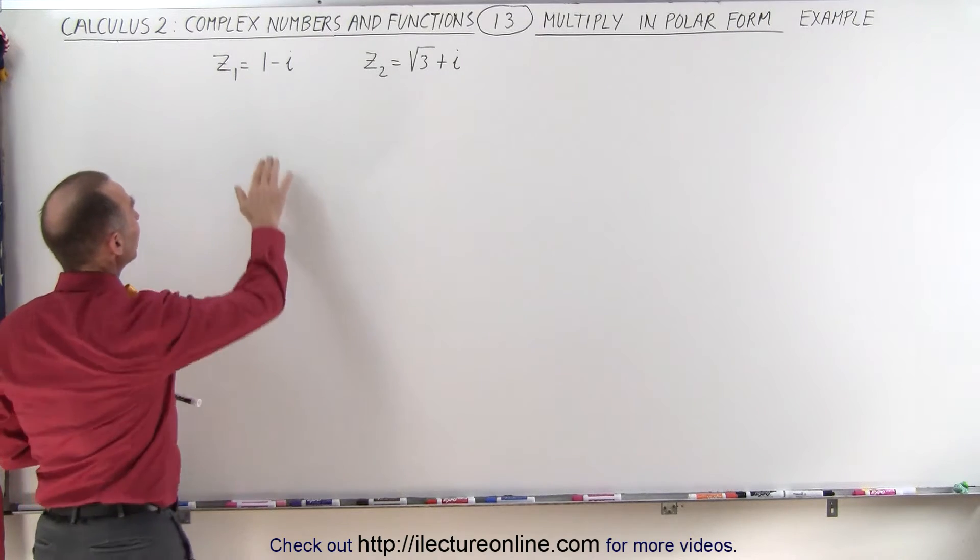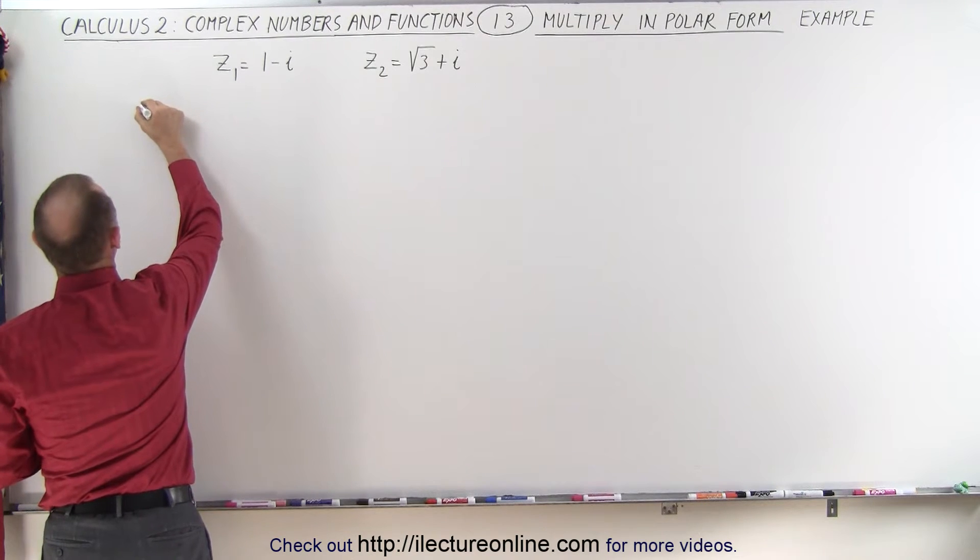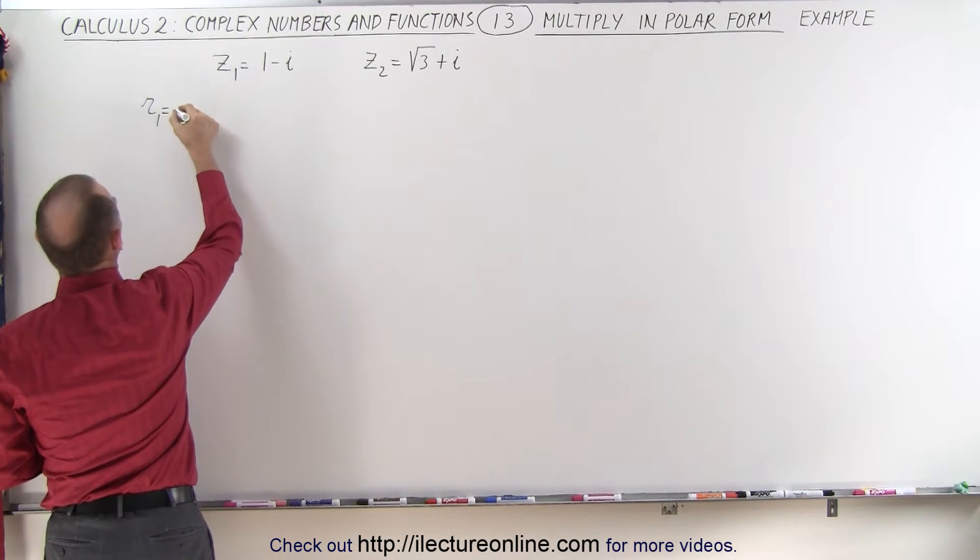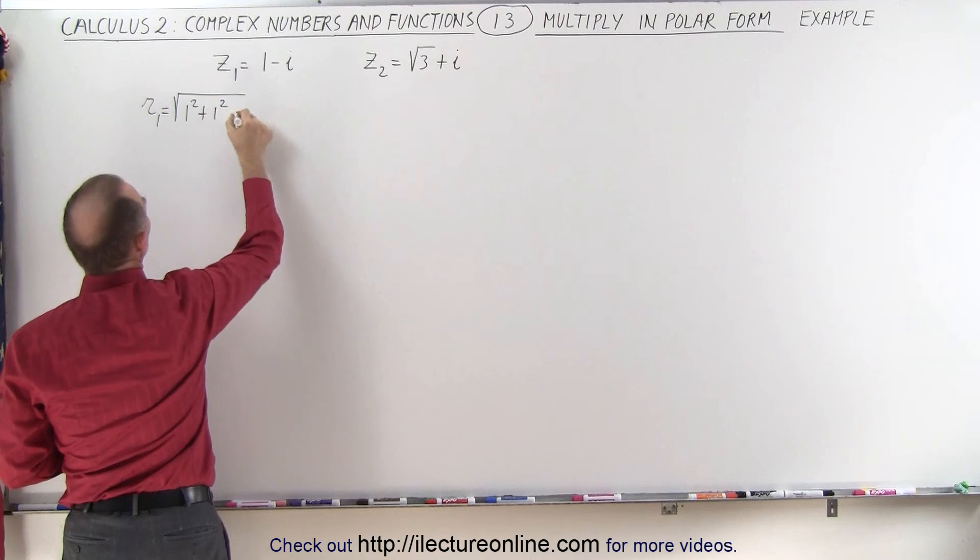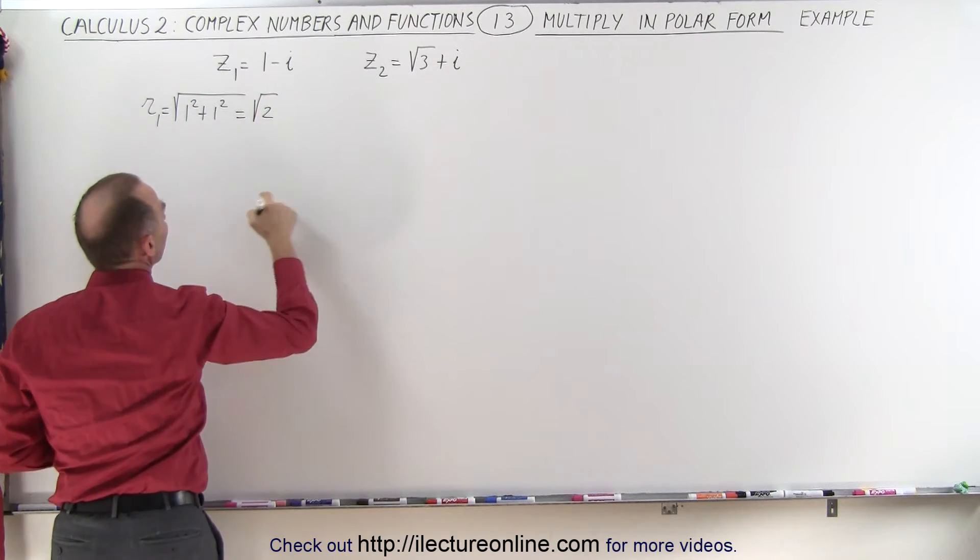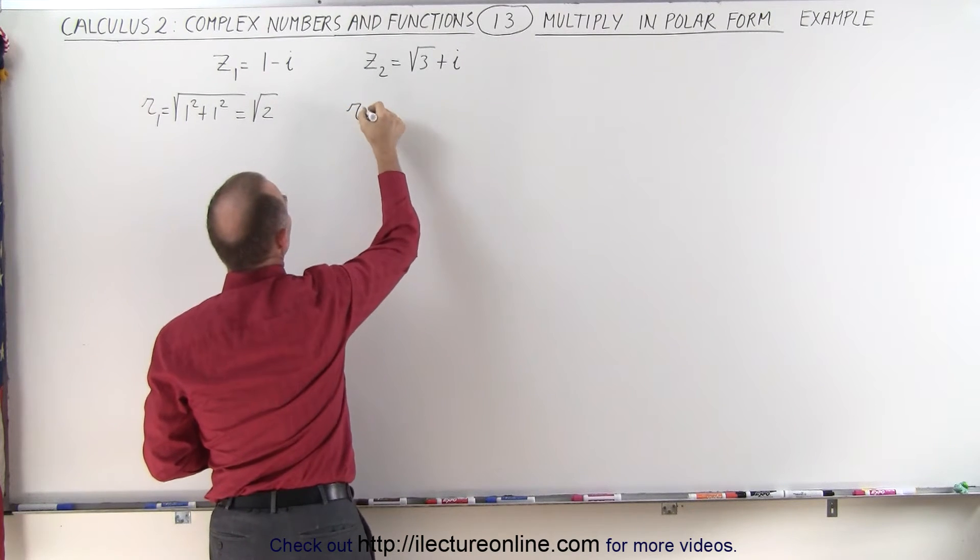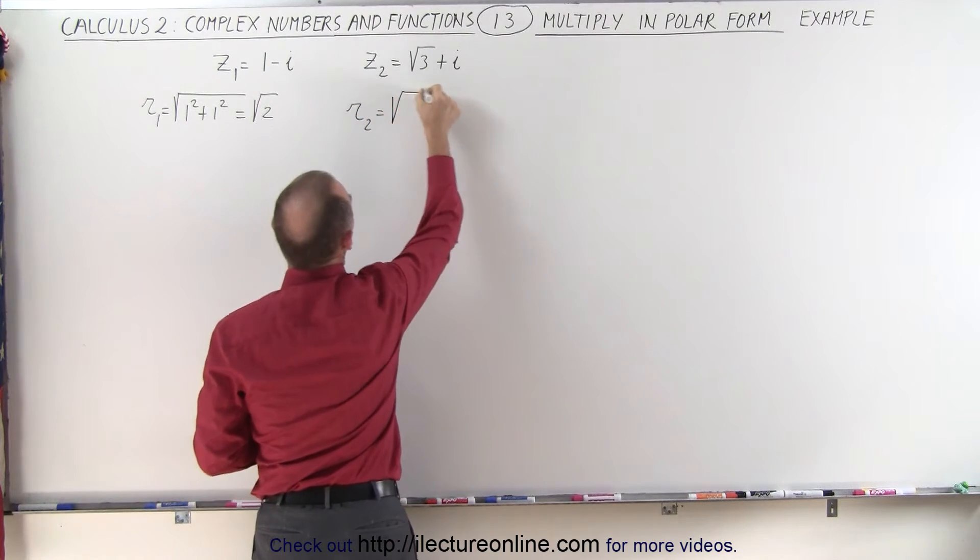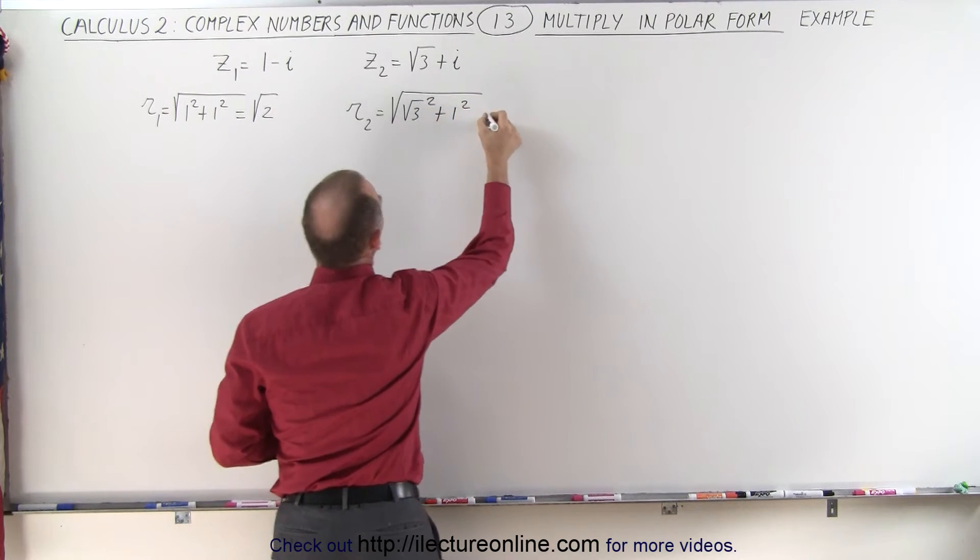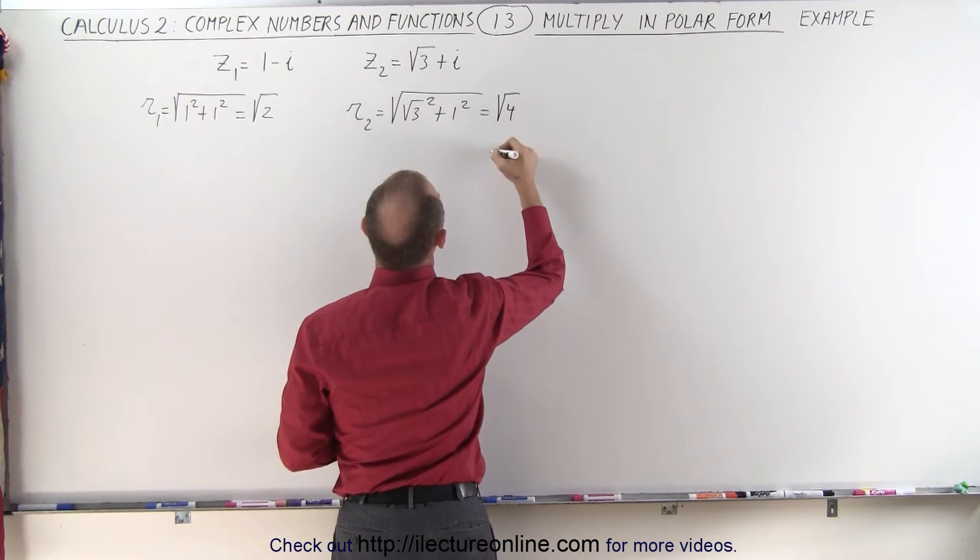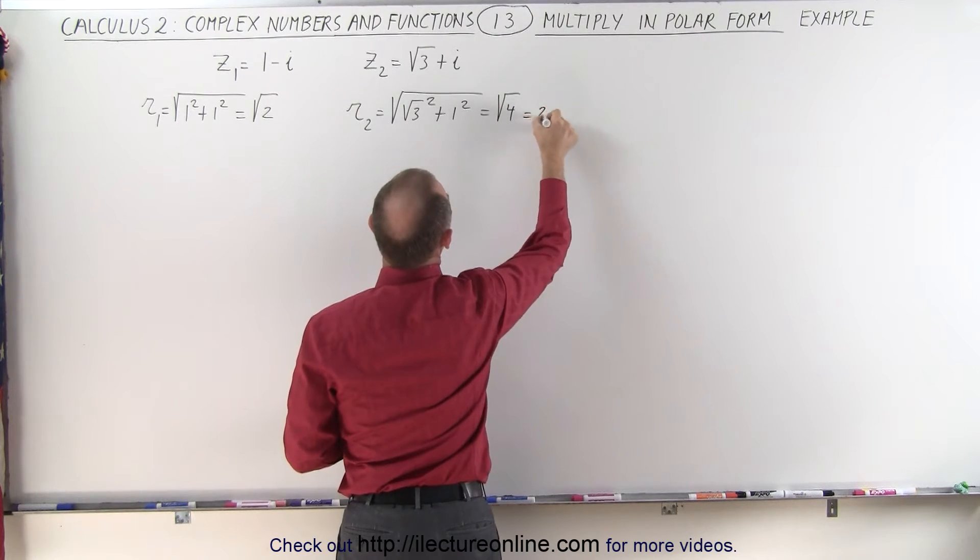So first we need to find R for the first one. R1 is therefore equal to the square root of 1 squared plus 1 squared which is equal to the square root of 2. Over here R2 is equal to the square root of the square root of 3 squared plus 1 squared which is equal to the square root of 4 which is equal to 2.